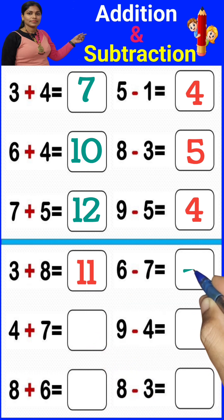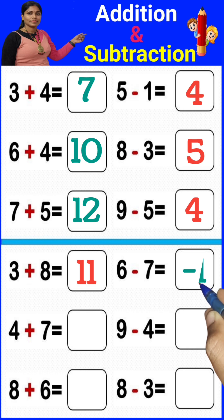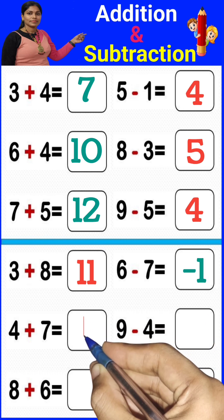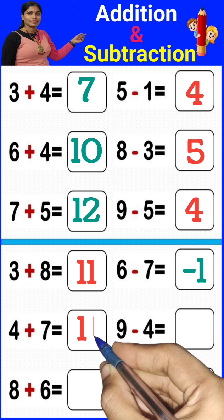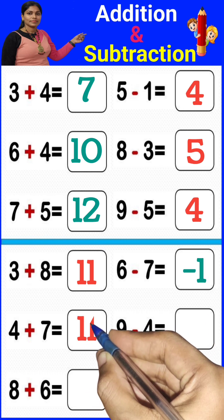What is 6 minus 7? Equals to minus 1. What is 4 plus 7? Yes, it's 11 again.